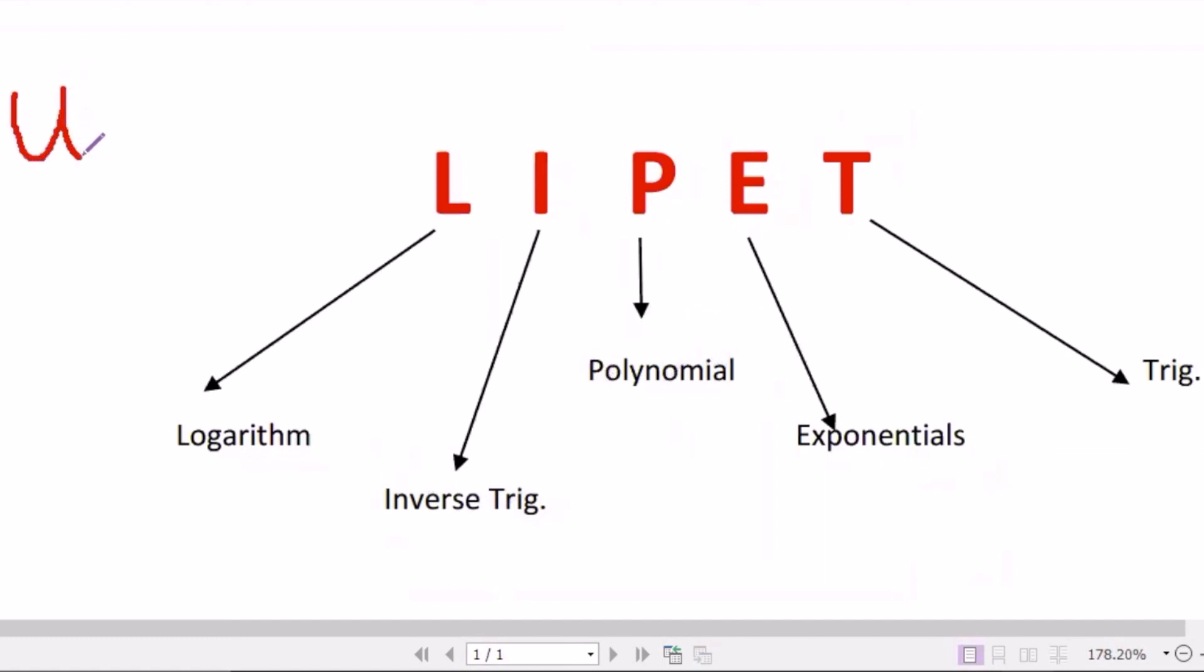You can select u using this order. If you don't have these three functions, then if you have exponential, you can select exponential as your u. You can follow this order to select u.